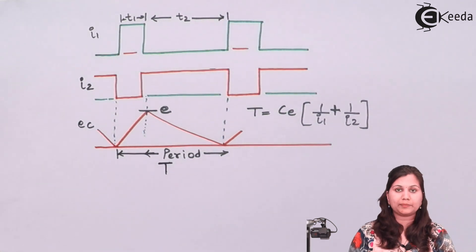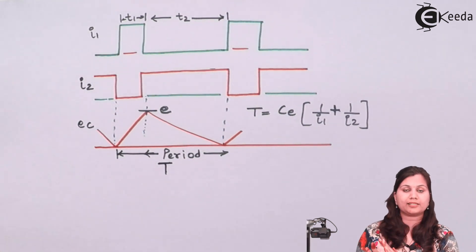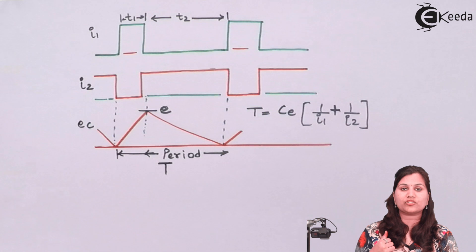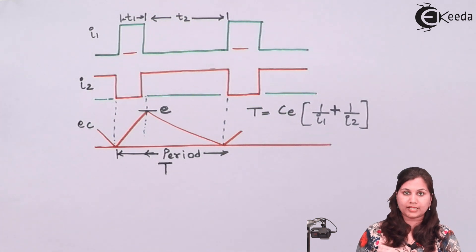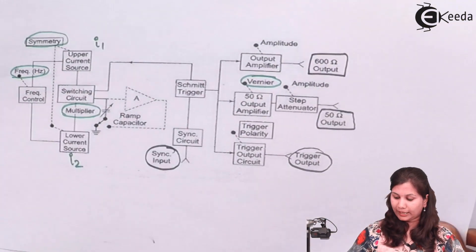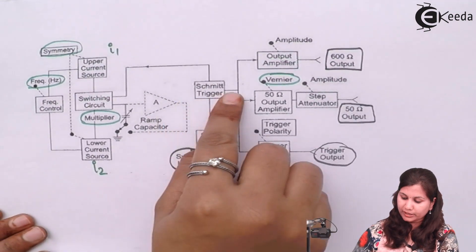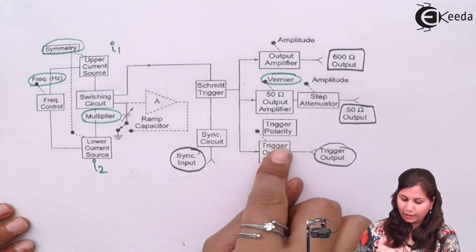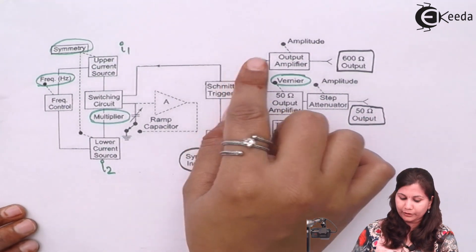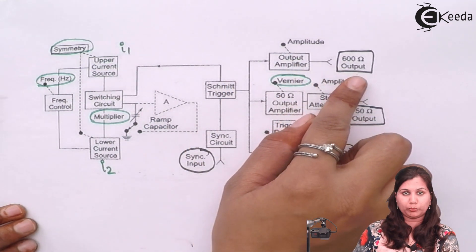The whole process repeats: the capacitor is charged, then discharged, and the Schmitt trigger changes its state at each stage. The output of the Schmitt trigger is passed to the trigger output circuit, to the 50 ohm output amplifier, and to the 600 ohm output amplifier. So this same output is given to three outputs.